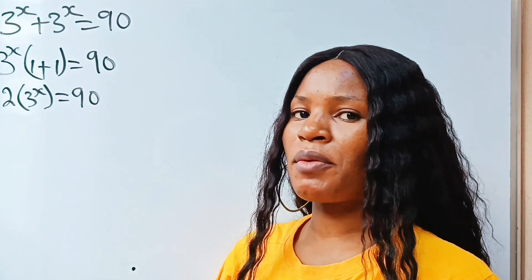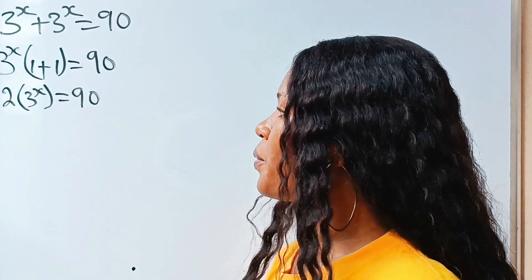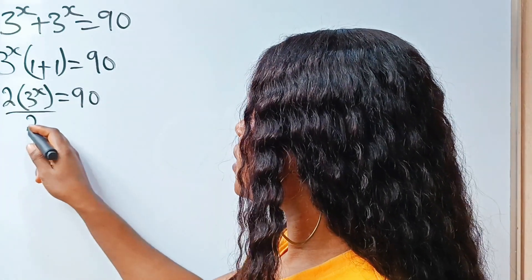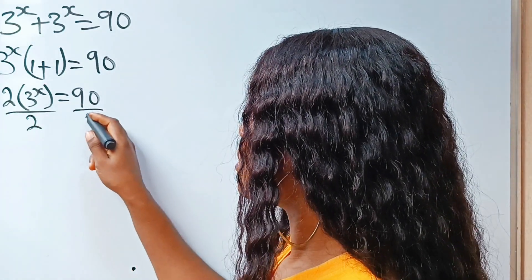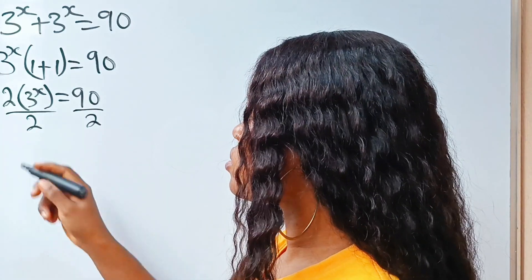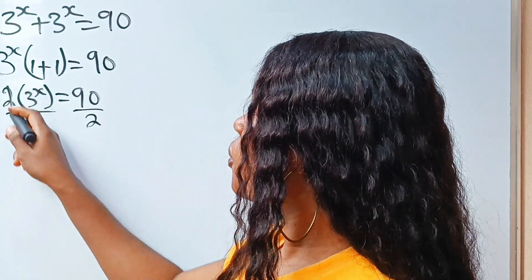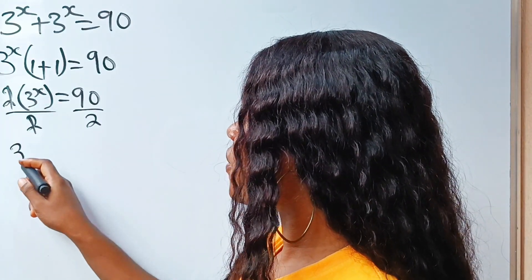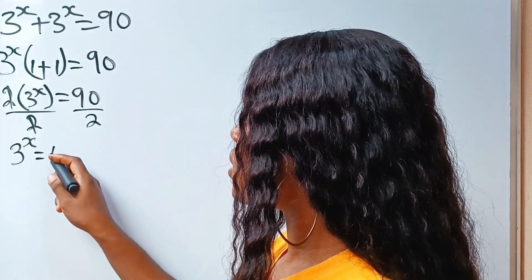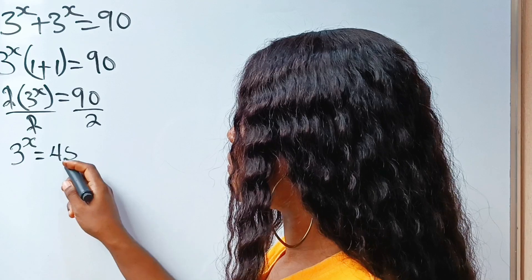Let's go ahead and divide both sides of the equation by 2. We will have that 3 to the power of x is equal to 45.